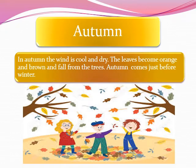Autumn season. In autumn, the wind is cool and dry. The leaves become orange and brown and fall from the trees. Autumn comes just before winter.